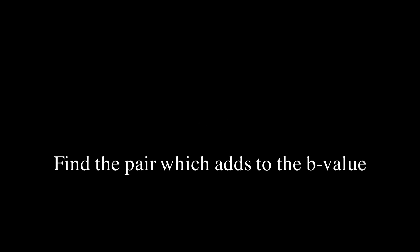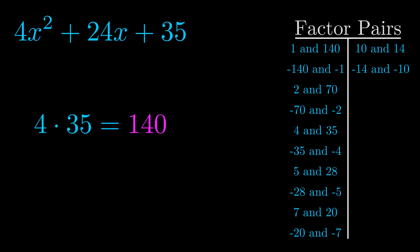The b value is the coefficient on the x term. That's the middle term, the one that we haven't done anything with yet. And really this is the only factor pair that we need.